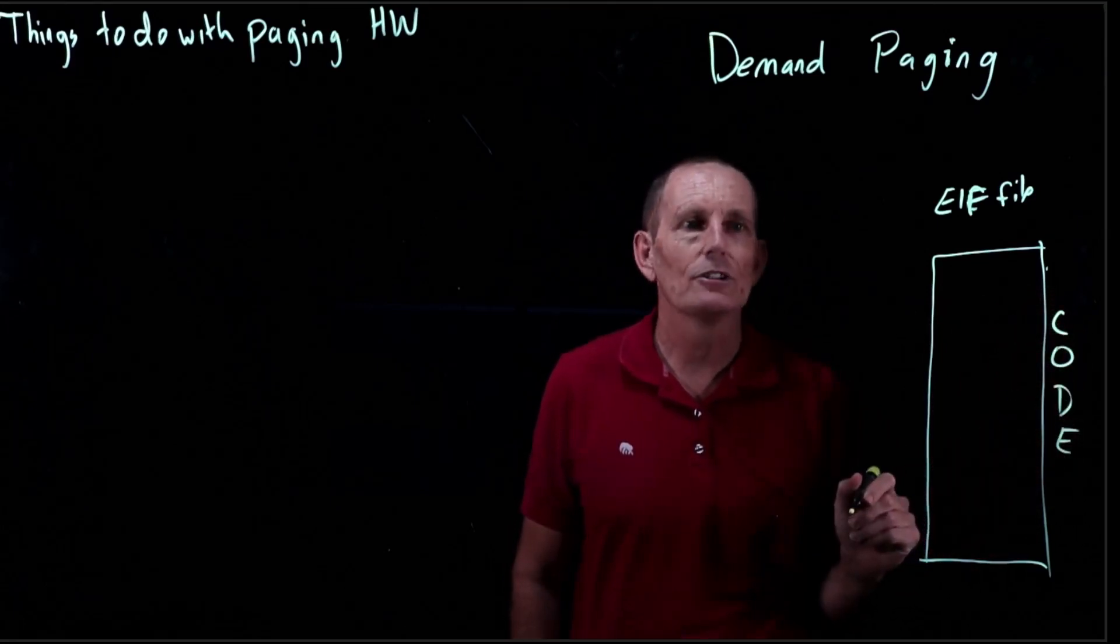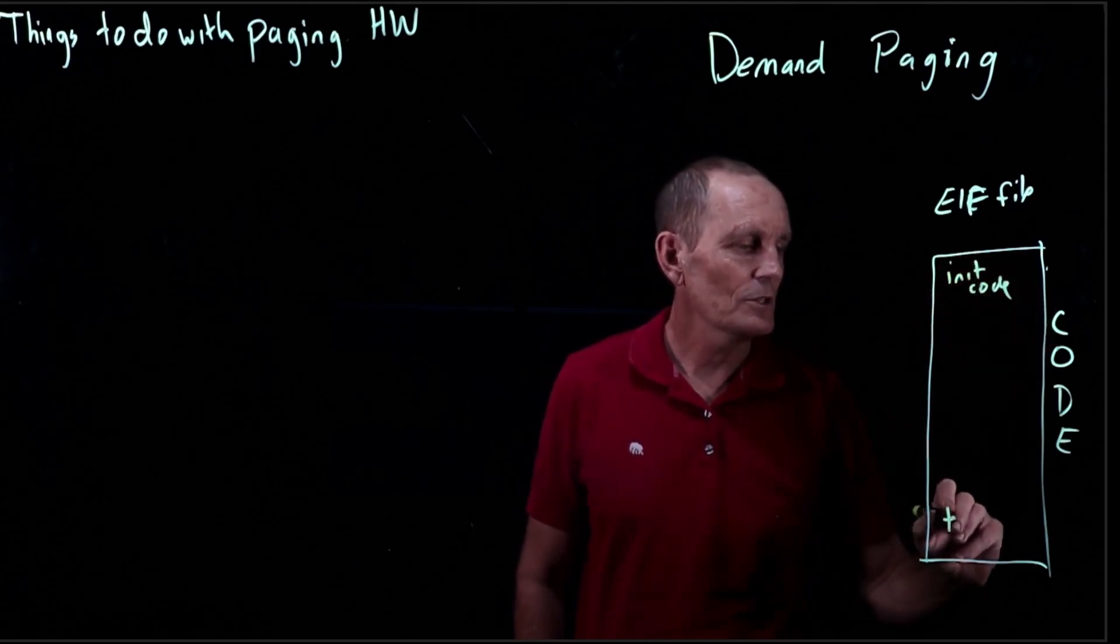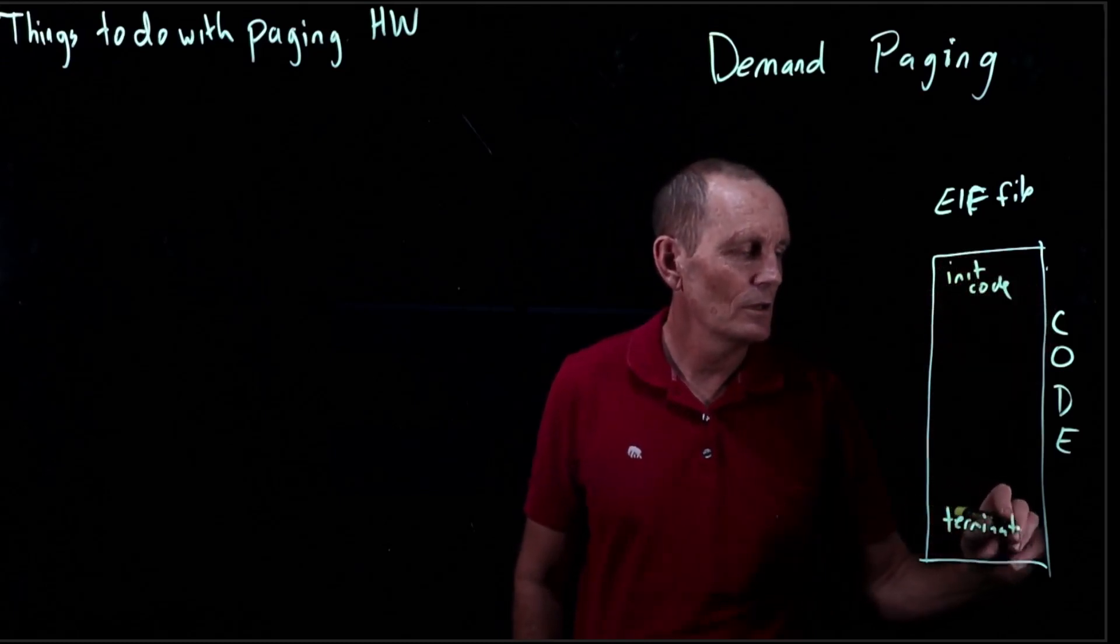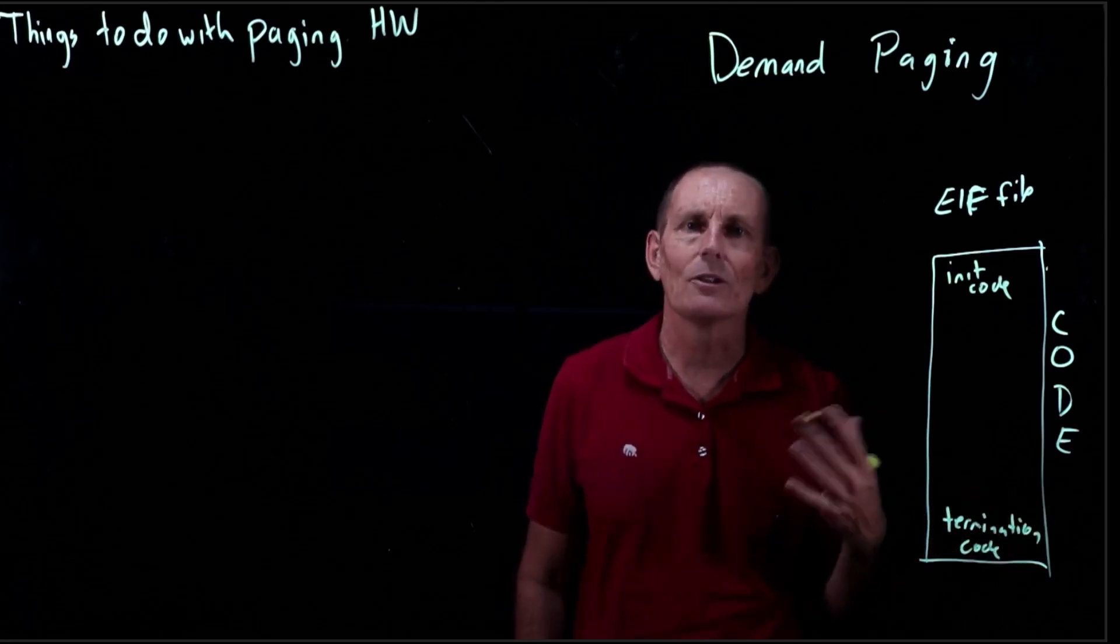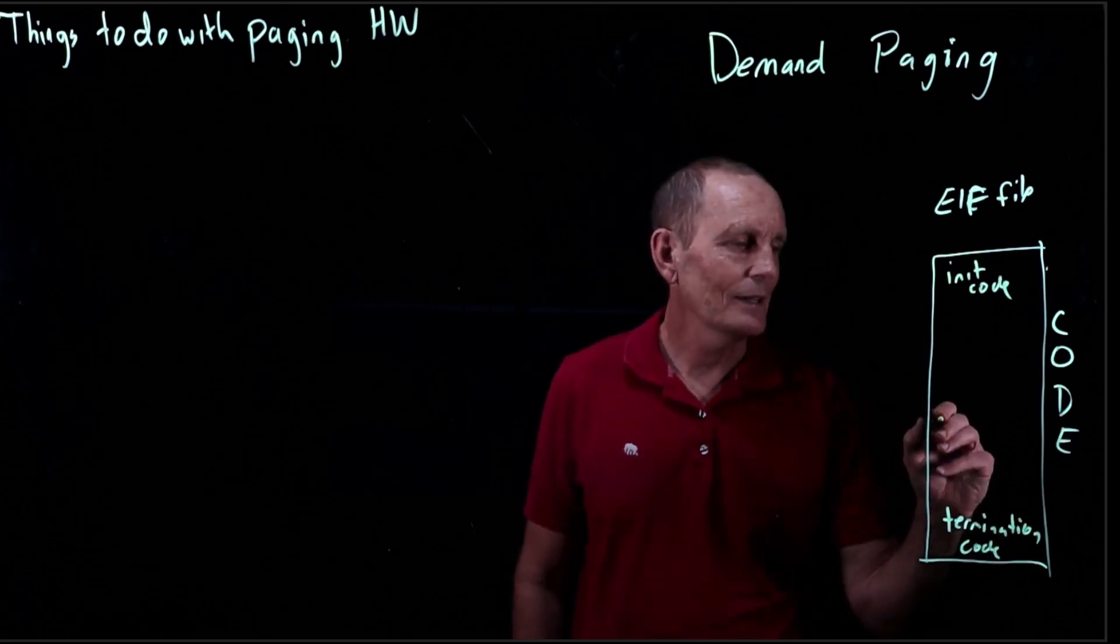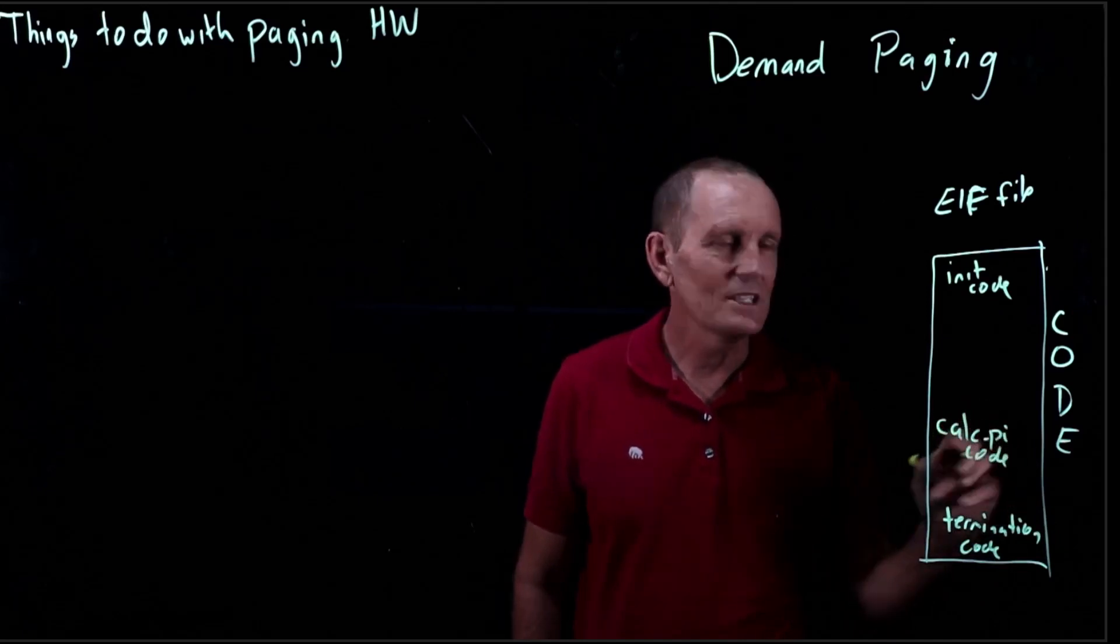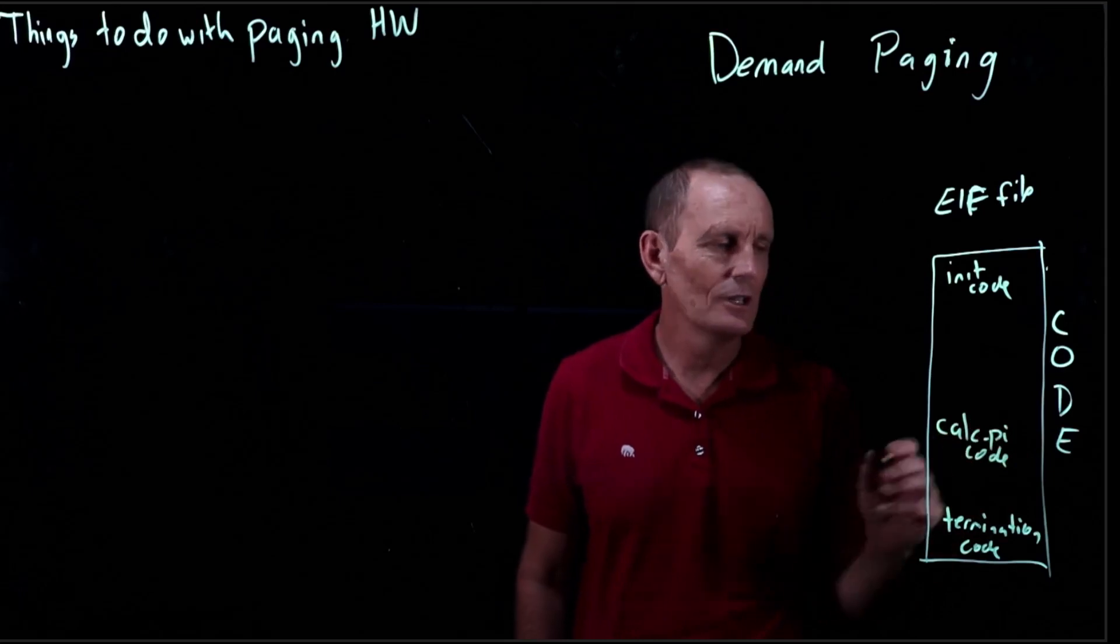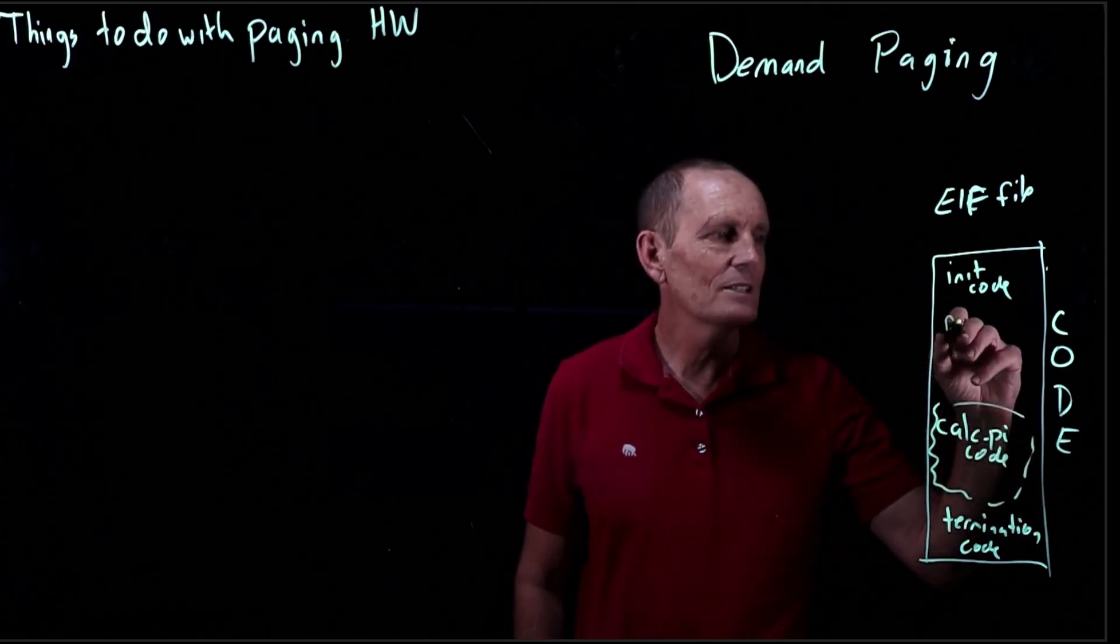And we've got a bunch of code in here. We've got some init code, we've got some termination code, we've got some code that, if the user puts in the minus calc pi flag, calculates pi. So we've got some calculating pi code. That's a pretty unusual option, rarely used but a lot of code. And we've got some regular code.